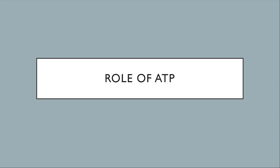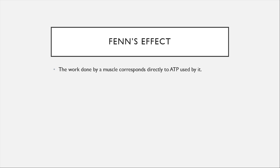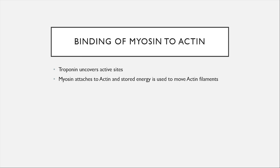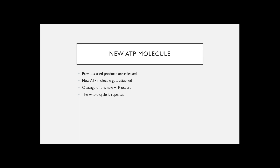Now let's study the role of ATP in this process. Fenn's effect explains that the amount of work performed by the muscle is directly correlated to the amount of ATP used by it. First, the myosin heads bind to ATP and cleave it to ADP and phosphate, but the products are not yet released. After this, active sites on the actin molecule get uncovered and the myosin heads attach. The stored energy from ATP cleavage causes the myosin heads to provide a power stroke. Once the head tilts, ADP and phosphate are released, and a new ATP molecule gets attached, causing detachment of the myosin heads. After detachment, another ATP molecule is cleaved and the cycle repeats.